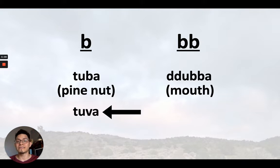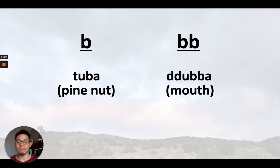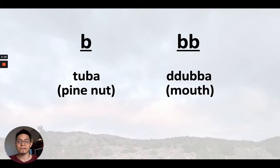The word for song, 'hubia,' some people spell it with a v because it has a very soft fricative-like sound. Compared with the double b, however, the double b is hard. 'Tba' means mouth. So compare the two: 'dba' versus 'dba.' In other dialects, it is a p sound, and a t for the double d.